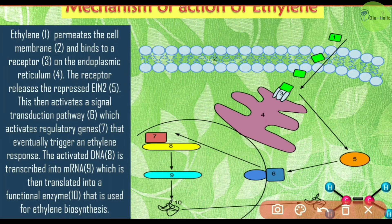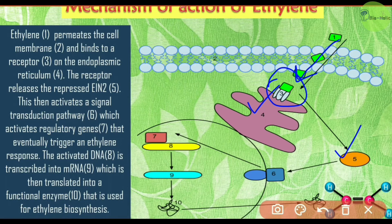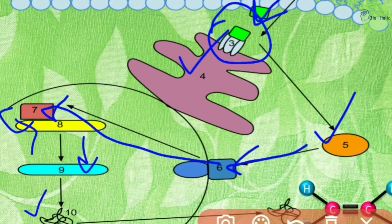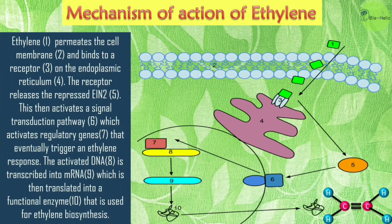Regarding the mechanism of action of ethylene: ethylene permeates the cell membrane and binds to a receptor on the endoplasmic reticulum. The receptor releases the repressed EIN2 protein, which activates a signal transduction pathway. This activates regulatory genes that trigger an ethylene response. The activated regulatory genes activate DNA to produce mRNA, which is then translated into a functional enzyme used for ethylene biosynthesis.